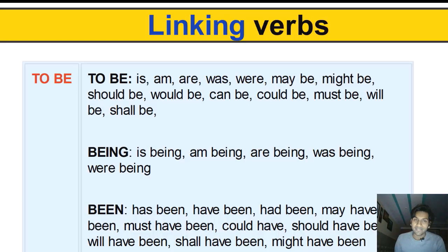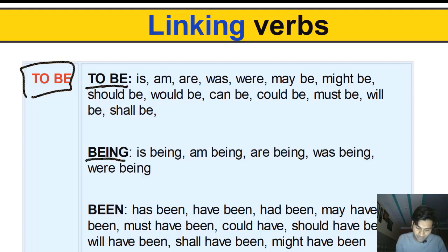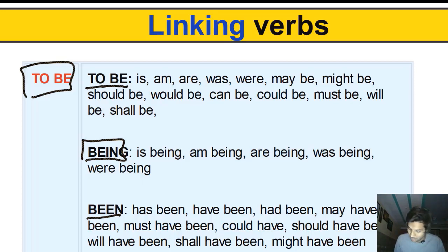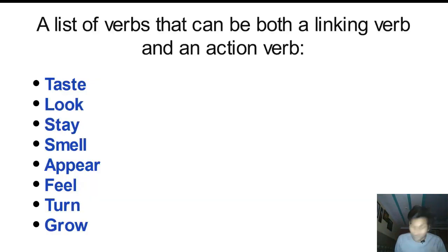It's very important to master what a linking verb is. Here is the list of all linking verbs. The to-be form is the most common, with three different forms: the simple to-be form (is, am, are, was, were), with modals (may be, might be, should be, would be); the being form (is being, am being, are being, was being, were being); and the been form (has been, have been, had been). Other linking verbs include: seem, look, feel, sound, taste, smell, stay, become, go.